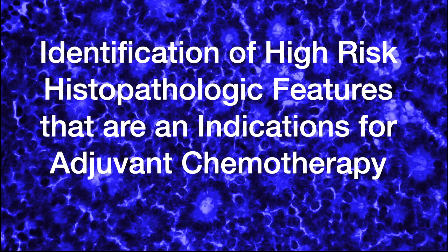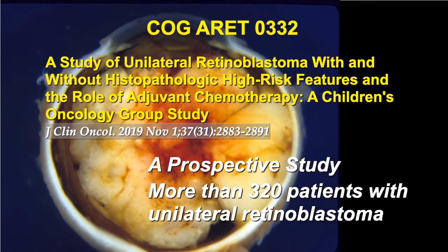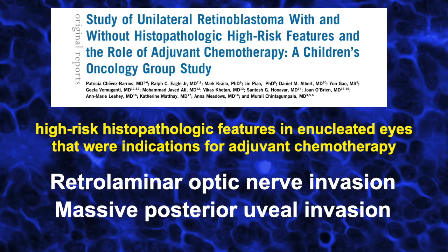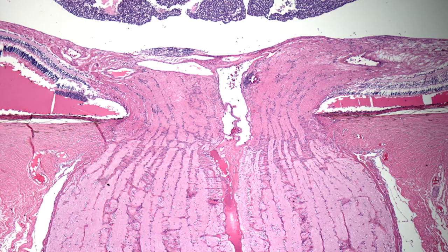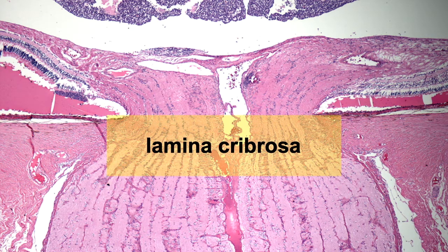Histopathology also identifies high-risk features that are indications for adjuvant chemotherapy. The Children's Oncology Group ARET-0332 study was a prospective study of more than 320 patients with unilateral retinoblastoma. Patients were treated with chemotherapy if high-risk features were discovered. The major indications for high-risk features include retrolaminar optic nerve invasion and massive posterior uveal invasion. Here's an example of retrolaminar invasion, a major risk factor and an indication for chemo at most centers. If the invasion is behind the lamina cribrosa, it's essentially outside of the eye — retrolaminar equals extraocular.